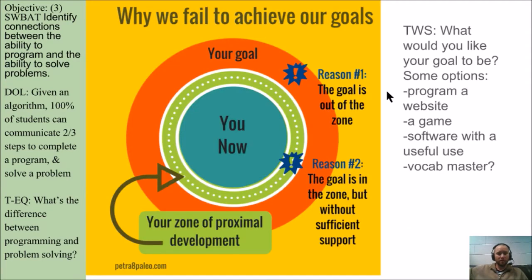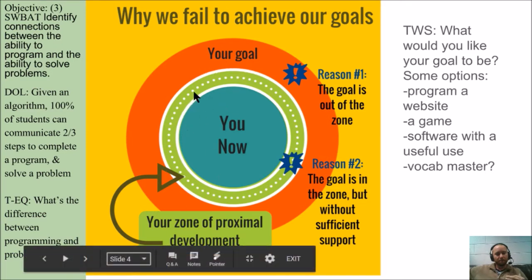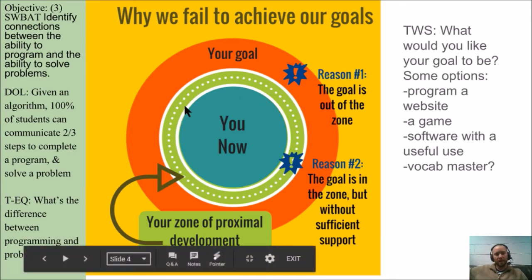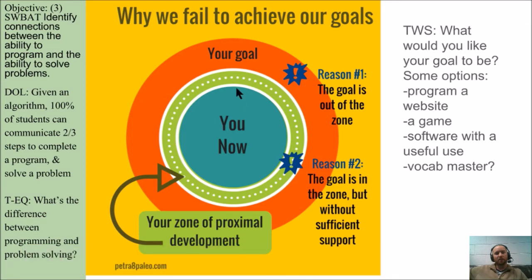Here's a great picture to understand what I'm talking about. Your goal may be to program a game or a website to produce some amazing content using some sort of computer language. But there is a line — the Zone of Proximal Development — that you need to cross in order to get to that goal.